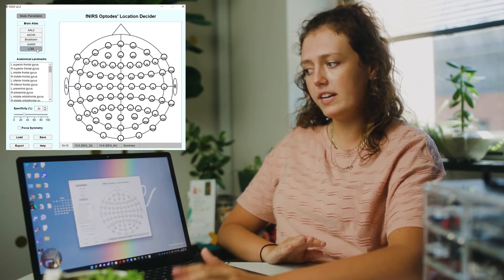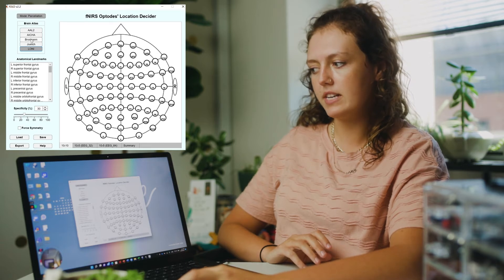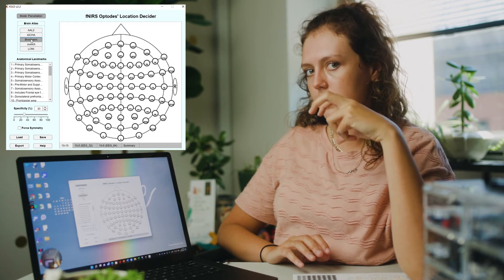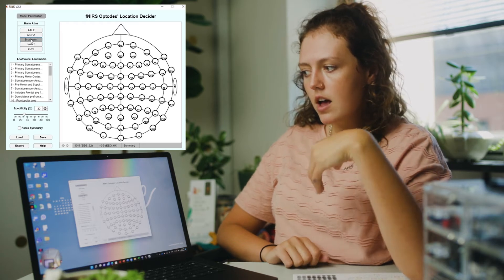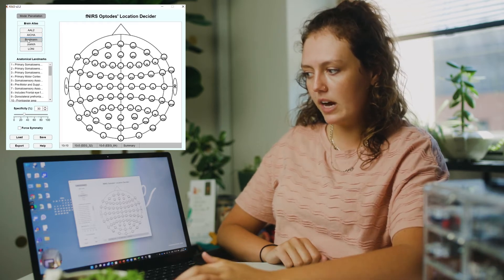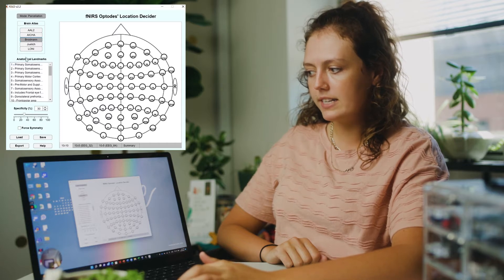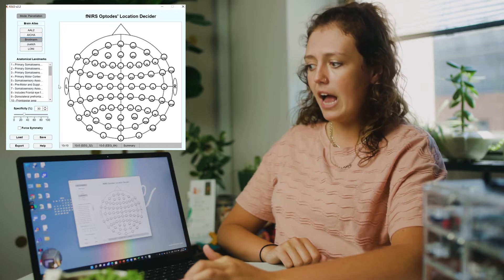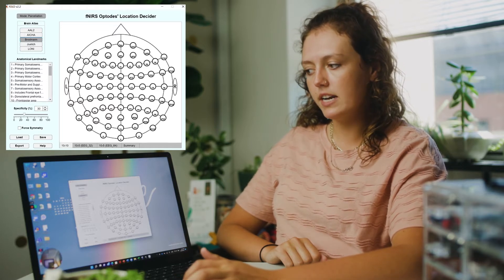For the example I'm going to show today, I'm going to use Brodman's area because I'm interested in some of those dorsolateral and frontal polar areas of the prefrontal cortex. As you can see, when you click on one of the atlases, there's a little box here and it shows the anatomical landmarks. I'm going to choose the landmarks that I'm interested in for my study.